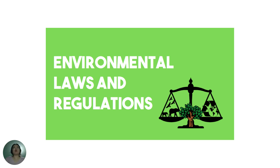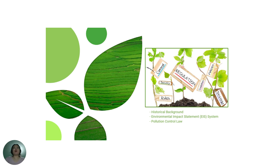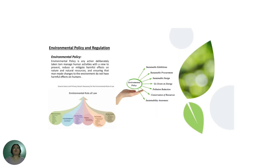Good day everyone, this is our Day 17 of our Jump Bird activity, entitled Environmental Laws and Regulations. Here we will talk about the historical background, the Environmental Impact Statement or EIS system, and pollution control law for environmental policy and regulation. It includes sustainable exhibition, sustainable procurement, sustainable designs, and sustainability awareness.